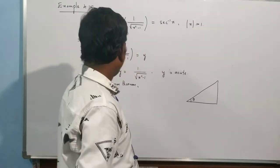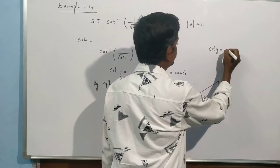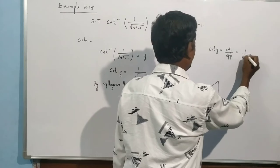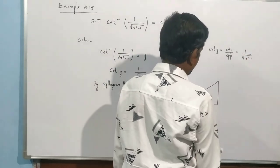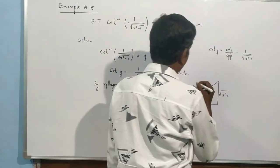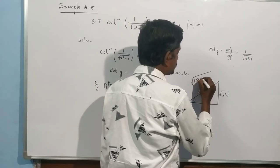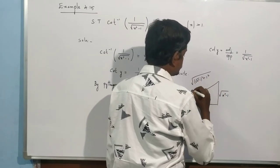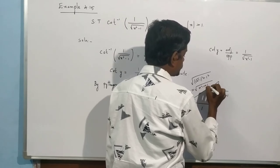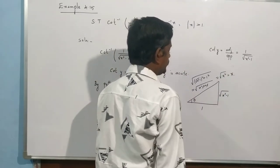So cot is adjacent by opposite. It is equal to 1 by root of x square minus 1. Adjacent is 1, opposite is root of x square minus 1. If we compare it to root of x square minus 1 whole square plus 1 square, root of square is equal to x square minus 1 plus 1, minus 1 plus 1 cancel.